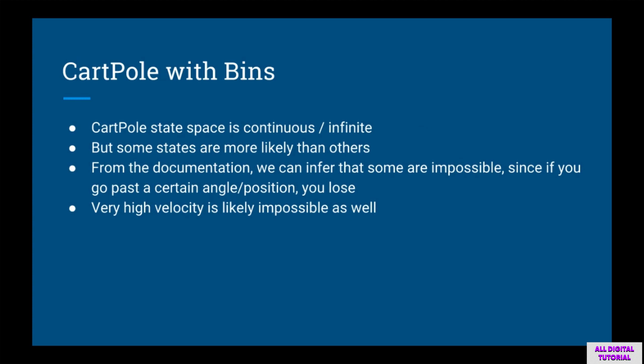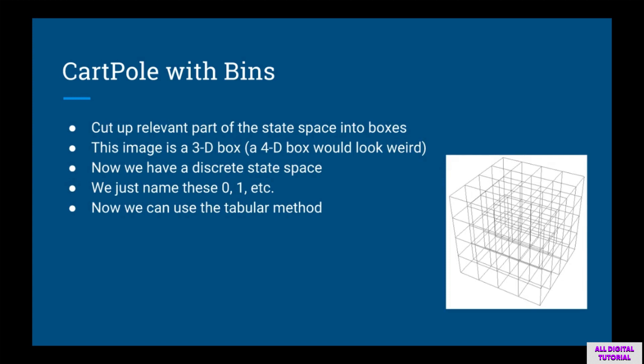This lecture is called CartPole with Bins, and we're going to use the tabular method. The state space in CartPole consists of continuous variables, so the state space is of infinite size. However, some states are more likely than others. We know from the documentation that if we pass a certain angle or position the episode ends, so some states are unreachable. Attaining infinite or very large velocity is also highly unlikely. We can take a finite amount of four-dimensional space and cut it into tinier boxes to get a discrete and finite state space, allowing us to use the tabular method.